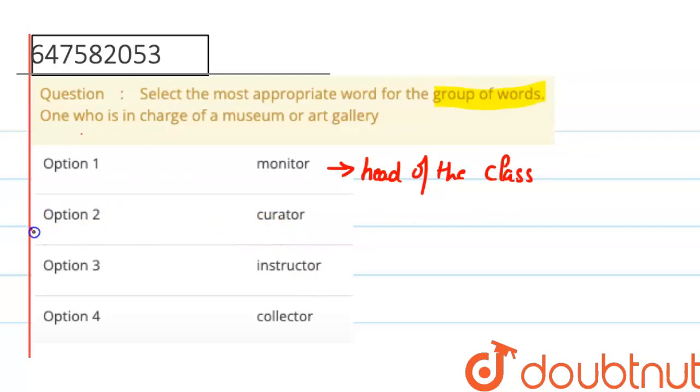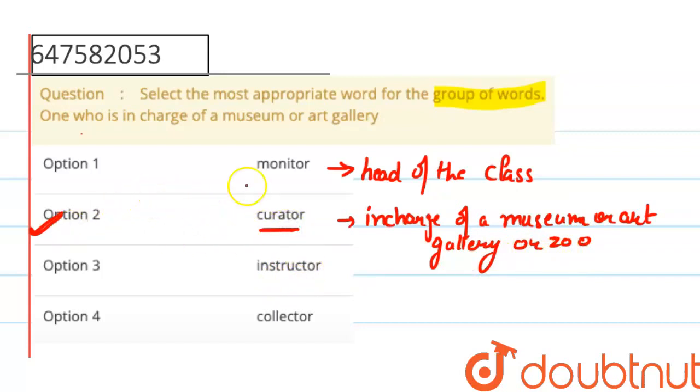Option 2 is curator. Curator is the correct answer. Curator is in charge of a museum or art gallery or zoo. So option 2 is the answer. Let's also look at the other options.